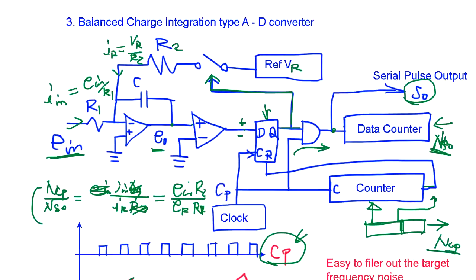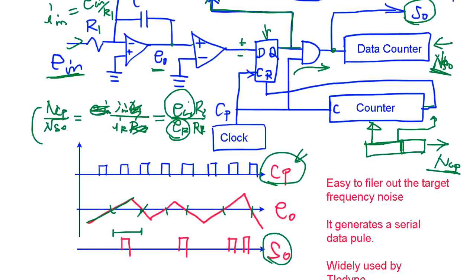So we take a ratio, we can figure out this is a reference voltage, this is input voltage. We can get input voltage by counting number of pulses.